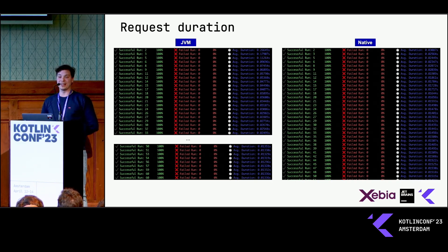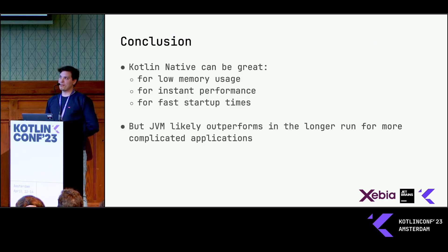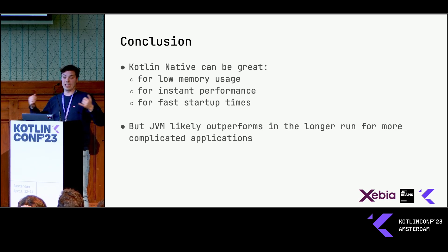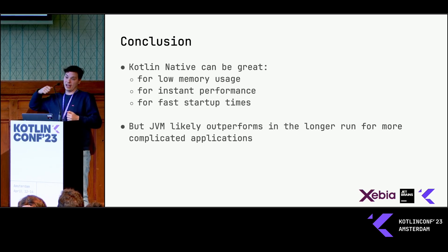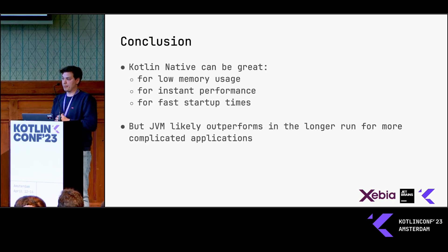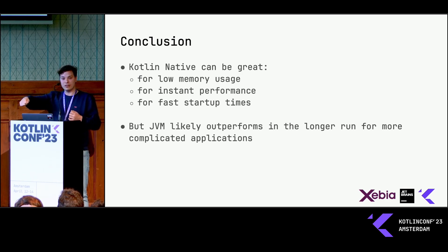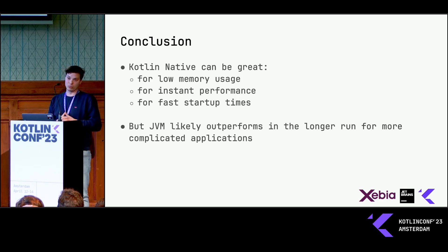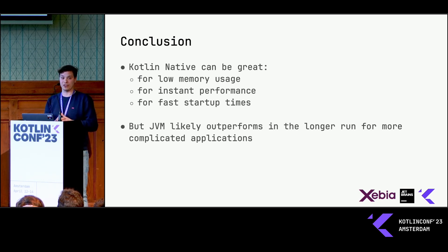In the final minute, let's jump to the conclusion. From what I found, Kotlin Native for running Ktor is pretty great: it has low memory usage, kind of instant performance, it's really nice for serverless tasks, and it has fast startup times. But in the long run, if you're having a more long-running application, the JVM is going to outperform it. So that's a trade-off you've got to make depending on your use case.